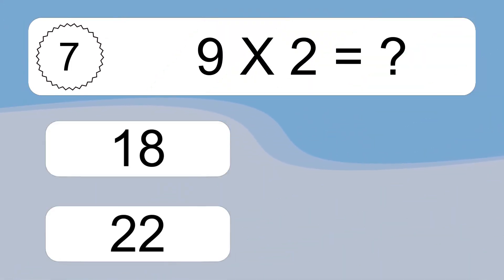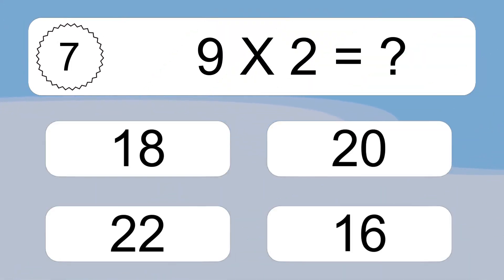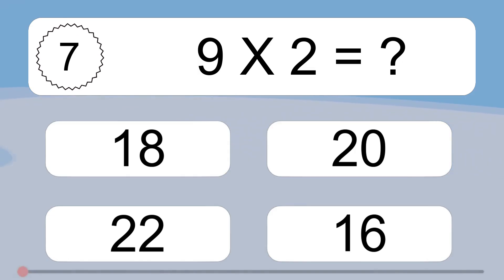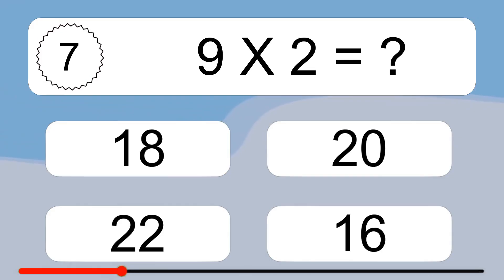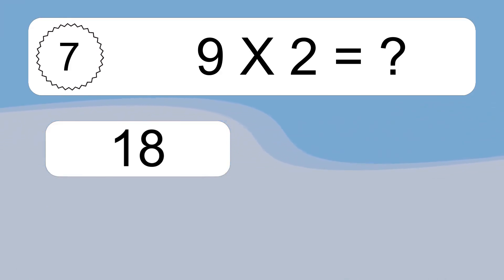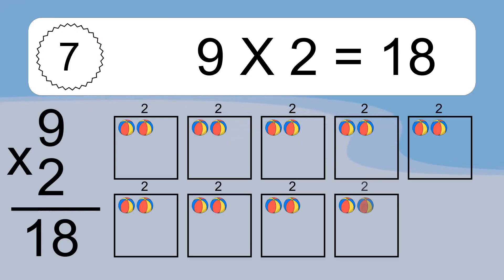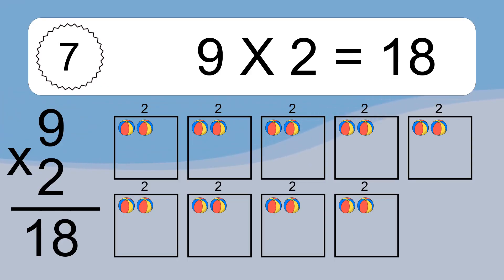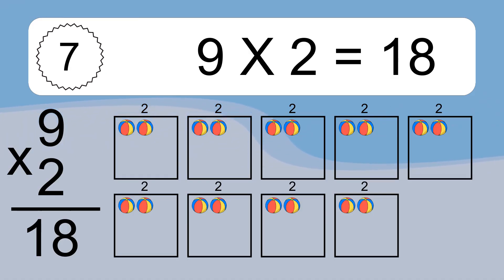9 times 2 equals what? 9 times 2 equals 18. We have 9 boxes, and each box has 2 colorful balls inside. If you count all the balls in all the boxes together, you will have 9 times 2 balls. This equals 18 balls.